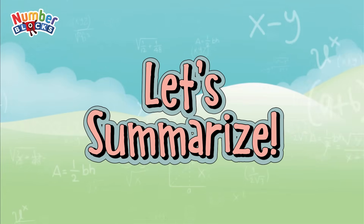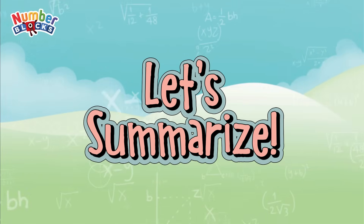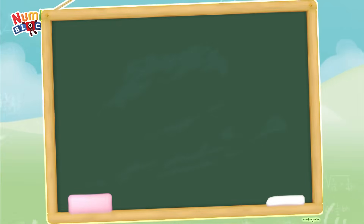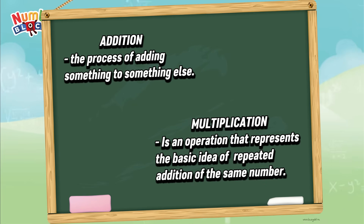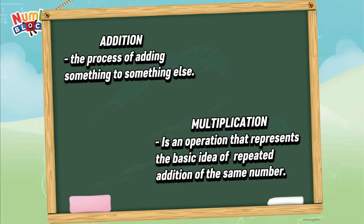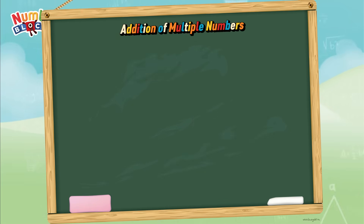Now, join me and let's summarize. Addition is the process of adding something to something else, while multiplication is an operation that represents the basic idea of repeated addition of the same number. Let's check addition of multiple numbers.